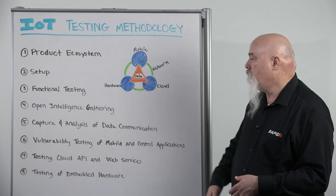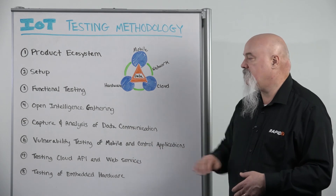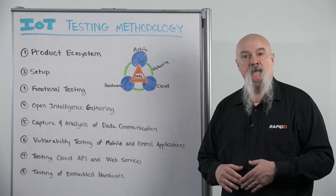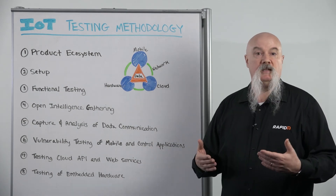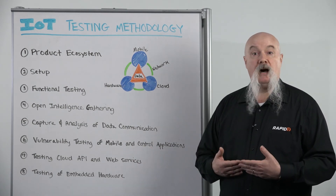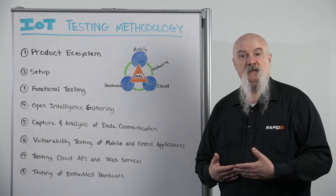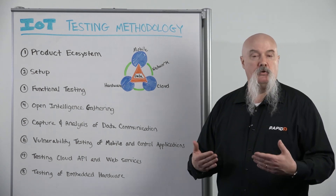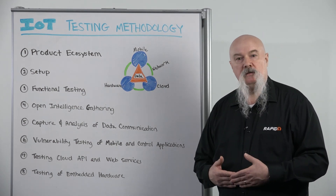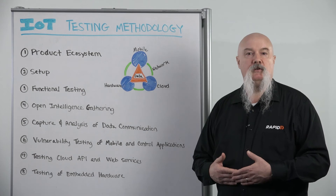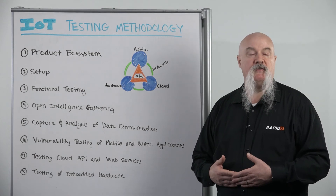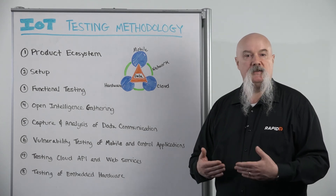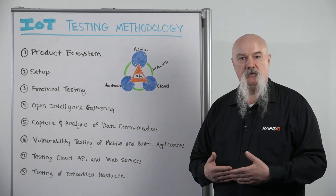Once that's completed, we'll move on to testing the cloud APIs. This will test for common cloud vulnerabilities — poor authentication, poor encryption. It may also include looking for things like SQL injection and cross-site scripting vulnerabilities.